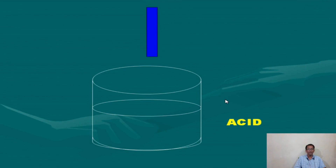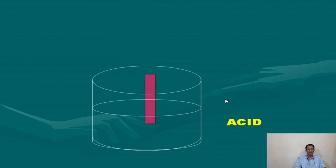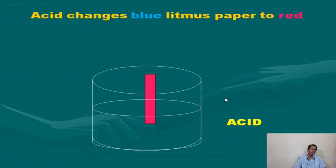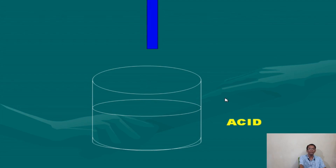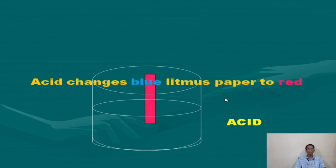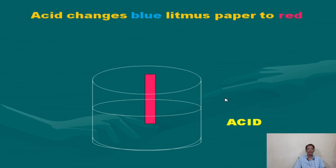You see these activities — blue litmus paper changing in acid. Blue litmus paper changes to red in acidic medium. This is one important characteristic of acid: acid changes blue litmus paper to red.